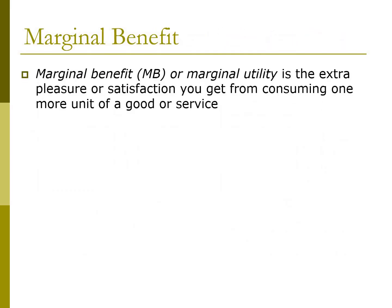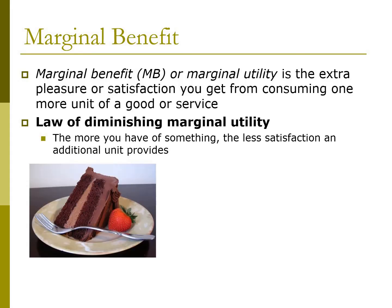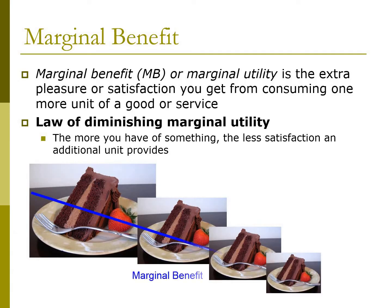The marginal benefit, also known as marginal utility, is the extra pleasure or satisfaction you get from consuming one more unit of a good or service. An important concept is the law of diminishing marginal utility: the more you have of something, the less satisfaction an additional unit provides. The first piece of cake on an empty stomach offers considerable satisfaction, but each additional slice gives less satisfaction than the previous one. It's important to distinguish between marginal benefit, which is going down — probably to zero after the fifth slice of cake — and total benefit, which continues to go up, but less and less with each additional slice.